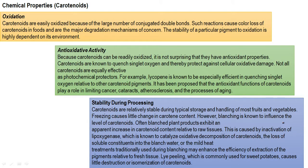Carotenoids have several important properties. Regarding oxidation: carotenoids are easily oxidized because of the large number of conjugated double bonds, and such reactions cause color losses in foods — this is the major degradation mechanism of concern. Regarding antioxidant activity: because carotenoids can be readily oxidized, they also have antioxidant properties. For example, lycopene is especially efficient at quenching singlet oxygen. This antioxidant activity has beneficial effects on human health, including roles in limiting cancer, atherosclerosis, and the process of aging.